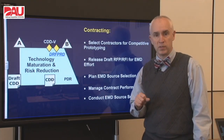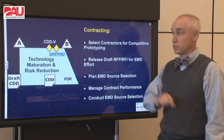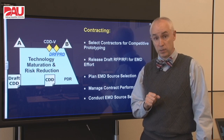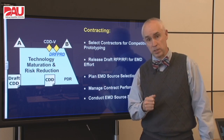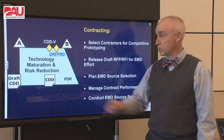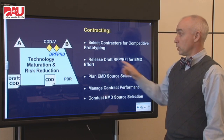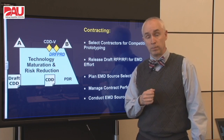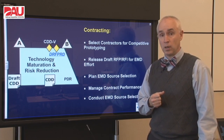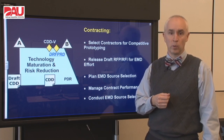Our contracting folks are going to be very busy. They're going to be starting two different source selection processes in this phase. They've got to first select sources for the competitive prototyping, and they can't release their RFP for that until Milestone A. They'll conduct that source selection and get contractors on board, and they'll also be working on planning for the next source selection, which starts at the development RFP release decision. To do that, they're going to release some draft RFPs or possibly a request for information to look at what's out there and what can be expected from industry partners, and that information will help build a better source selection plan and a better request for proposals.